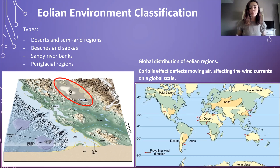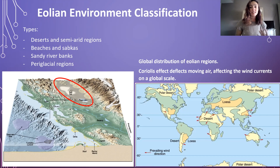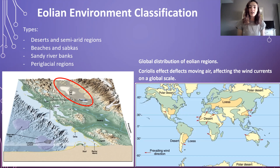And in the figure to the bottom right, we have a map showing the distribution of deserts in the world. We have the light tan regions being the desert environments, either polar deserts or deserts near the equator, which are typically dominated by sand rather than snow. We'll be focusing on the sand deserts and sand dunes and sand dune fields. The distribution of these deserts throughout the world is controlled largely by the Coriolis effect, which deflects moving air, affecting the wind currents on a global scale.